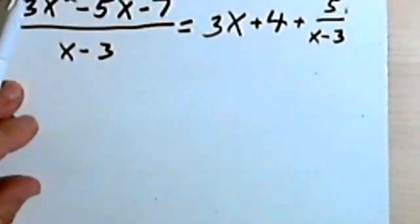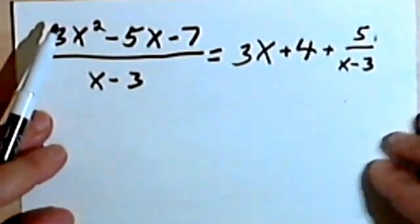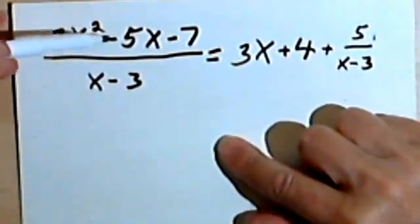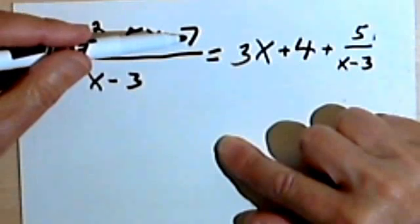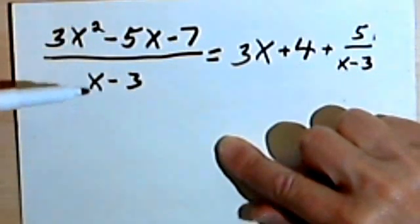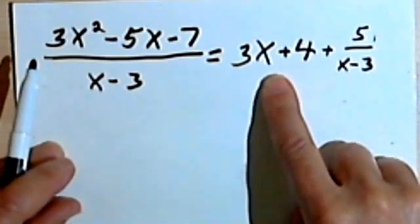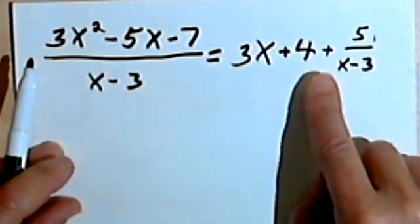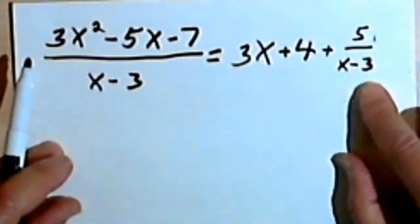So let's go back to the first problem I did in the previous video. The problem was 3x squared minus 5x minus 7, and that was divided by x minus 3. And the answer we came up with was 3x plus 4 plus 5 over x minus 3.